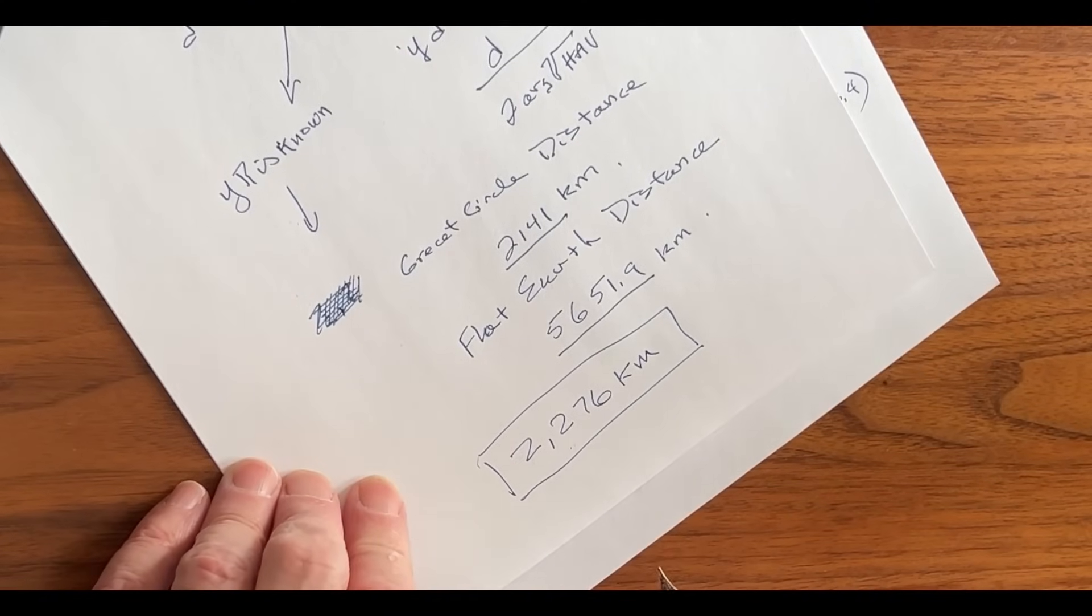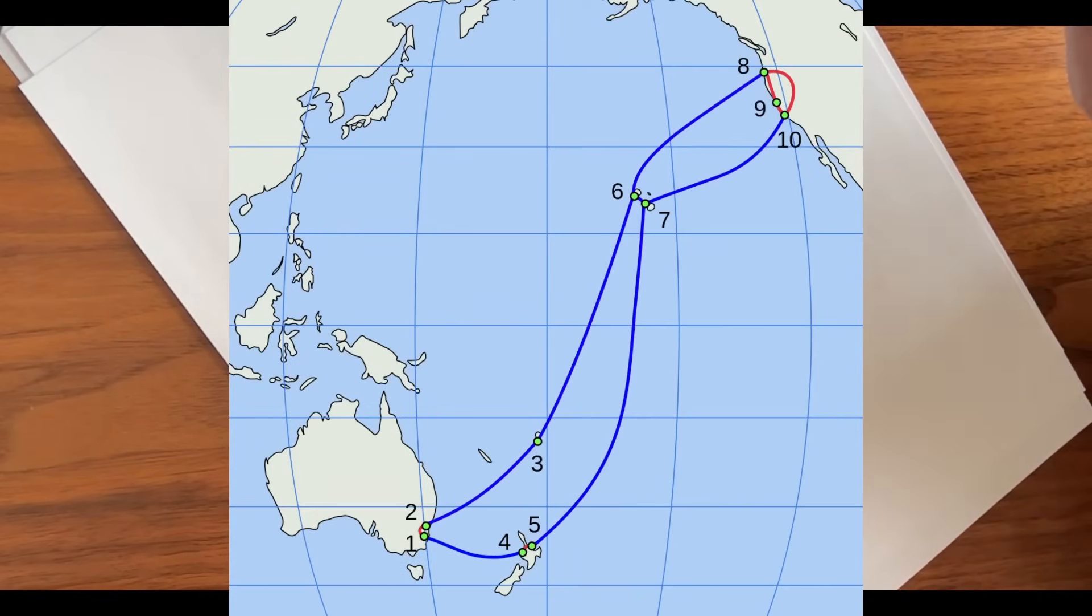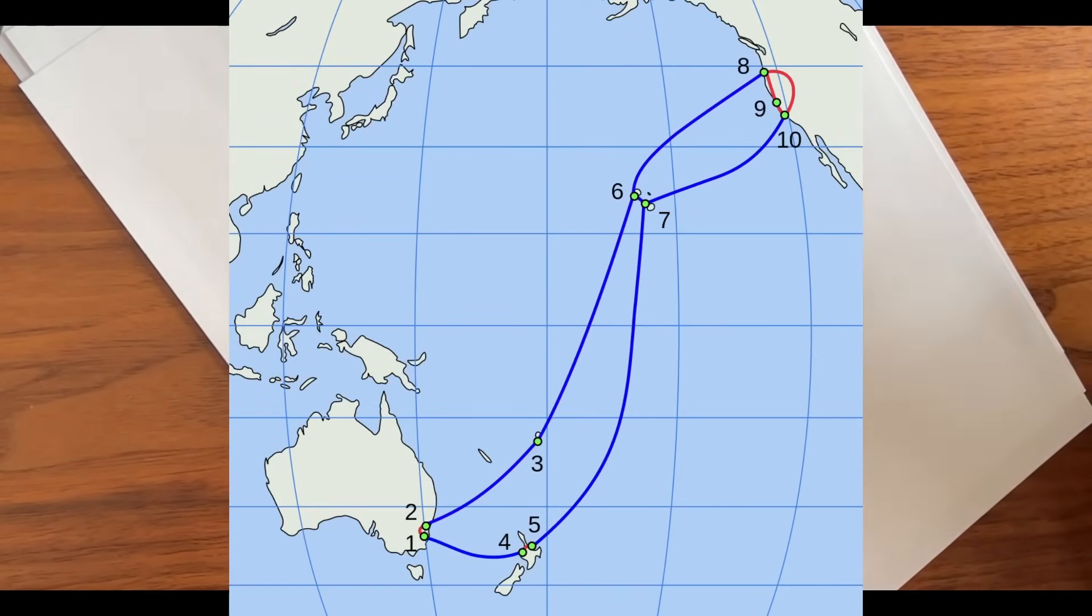But wait, there's more. We have another section of cable that goes from Brookvale, New South Wales, up to Suva, Fiji, and that is between points number two and point number three. Let's go ahead and do the same thing for that. Here are the coordinates of Brookvale. Here is the coordinates of Suva.